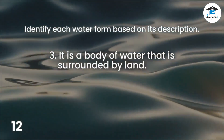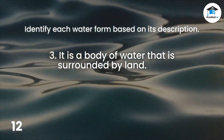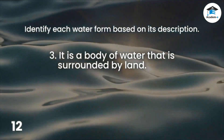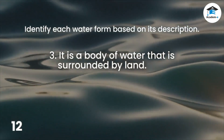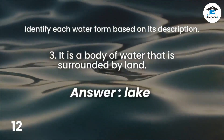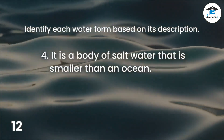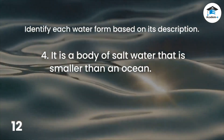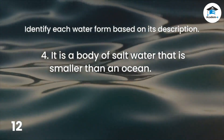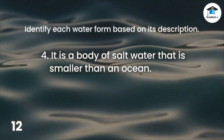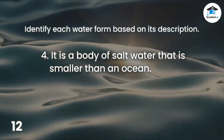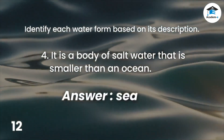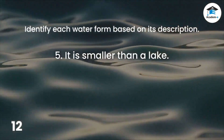Number 3: It is a body of water that is surrounded by land. The answer is lake. Number 4: It is a body of salt water that is smaller than an ocean. The answer is sea.